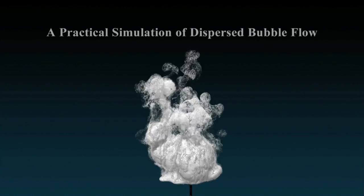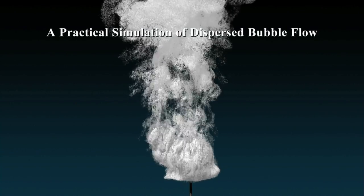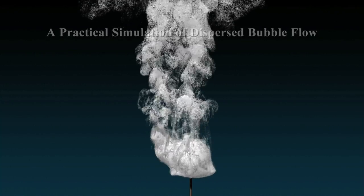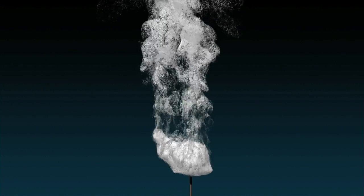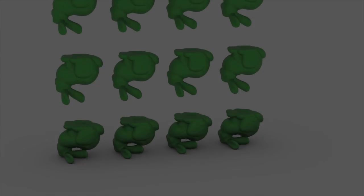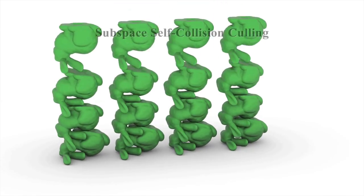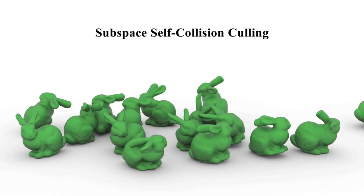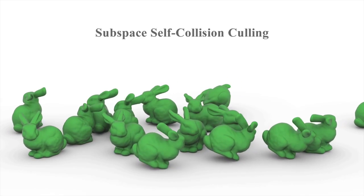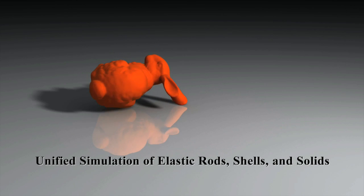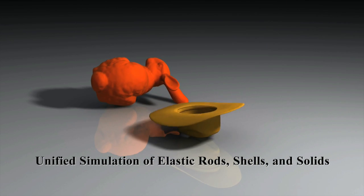No SIGGRAPH would be complete without bunnies. In this case, one made of zillions of bubbles. And here's a fast method for handling collisions of deformable bunnies. This paper handles not only solid bunnies, but shells and rods.